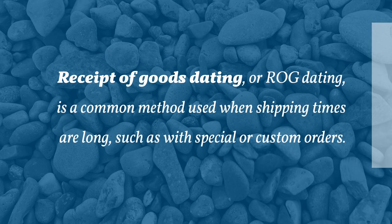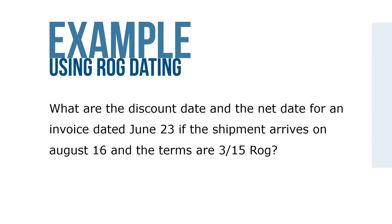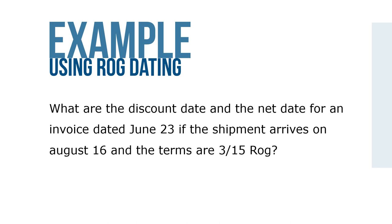Receipt of goods dating, or ROG dating, is a common method used when shipping times are long, such as with special or custom orders. When ROG dating is used, the terms of sale begin the day the goods are received at the buyer's location, so the buyer does not have to pay for the merchandise before it arrives. For example, for an invoice dated June 23rd where the shipment arrives on August 16th with terms 3/15 ROG: the discount period starts on August 16th, so the discount date equals August 16th plus 15 days equals August 31st, and the net date equals August 31st plus 20 days equals September 20th.